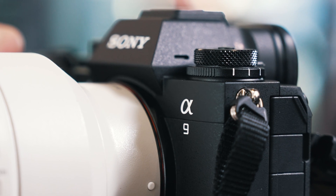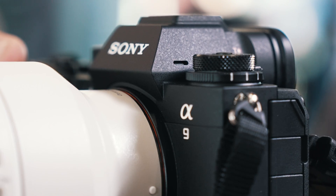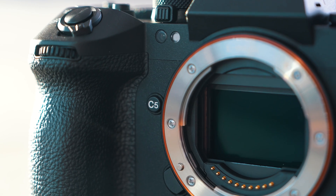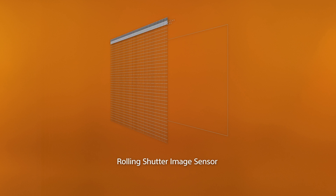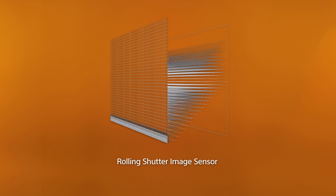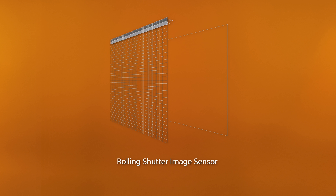By now, perhaps you've heard about the A9 III and its global shutter, but one of the things that global shutter makes possible is flash sync at any shutter speed. Most cameras with rolling shutter sensors are limited in how fast a shutter speed you can use before you run into exposure issues because of that mismatch between the flash duration and the shutter speed.